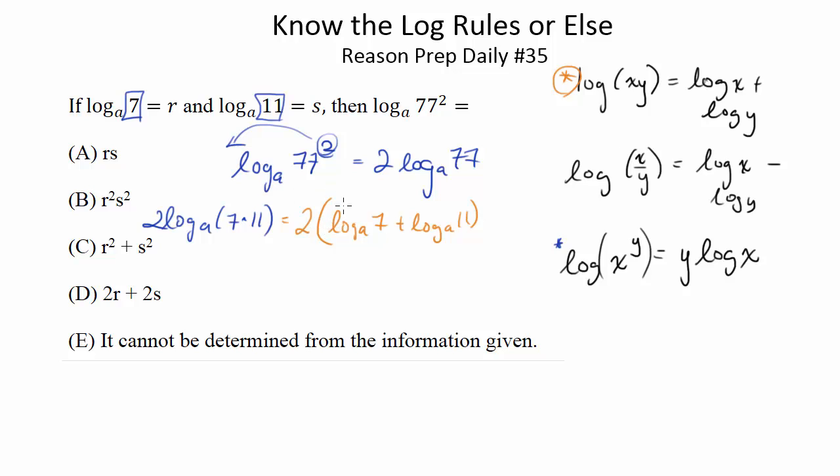So now we make our substitutions because this is equal to r, and this is equal to s by our definitions above. So now we're going to substitute those in. We're going to get 2 times r plus s, which is the same thing as 2r plus 2s, and that would be choice D.